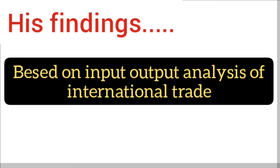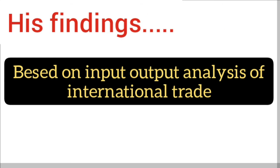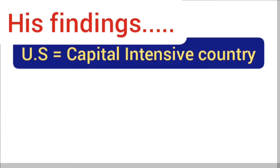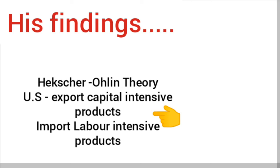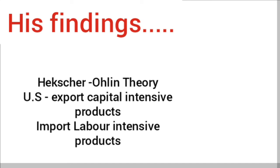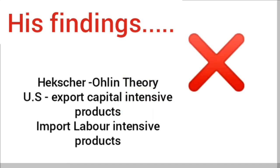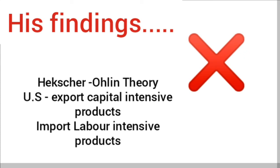Based on his input-output analysis of international trade, he discovered that the US is actually a capital intensive country. So according to Heckscher-Ohlin theory, the US would have to export more capital intensive products and import more labor intensive products. But surprisingly, the facts he discovered from his study were completely paradoxical — opposite to the Heckscher-Ohlin theory.